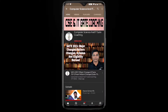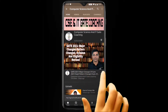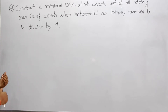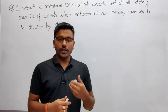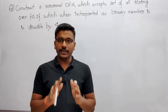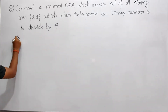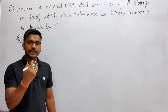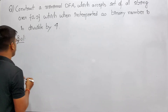Hello everyone, welcome to computer science and IT gate coaching. Don't forget to subscribe my channel and press the bell icon to get instant notifications of my free lectures. Now, the problem is to construct a minimal DFA which accepts the set of all strings over 0,1 which when interpreted as a binary number is divisible by 4. By using the shortcut we can get a DFA, but it will not be a minimal DFA. Let me show that.